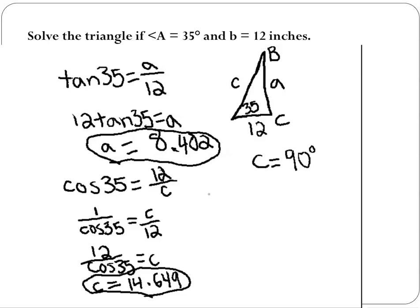Once we know that, we can use the fact that angle B is going to be found by subtracting angle C and angle A from 180 because there's 180 degrees in every single triangle. So B is going to come out to be 55 degrees, and that is how you solve that problem.